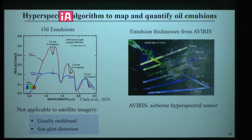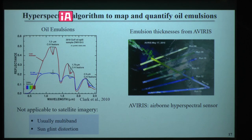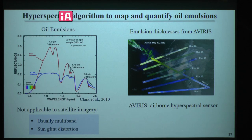USGS has used elevated reflectance and carbon-hydrogen absorption features to map and quantify oil emulsion using hyperspectral airborne data. However, this hyperspectral algorithm cannot be applied to satellite imagery because satellite images are usually multiband and lack the band information required by the hyperspectral algorithm. Additionally, satellite images are usually under some extent of sun glint, which distorts the reflectance spectra.